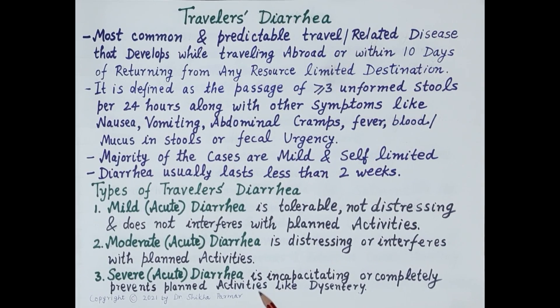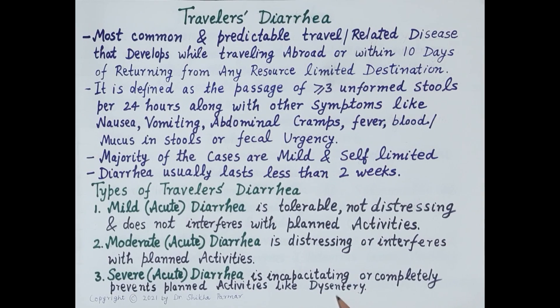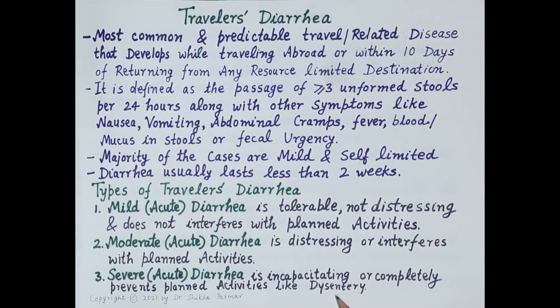Severe travelers' diarrhea is incapacitating and completely prevents planned activity. One example of severe travelers' diarrhea is dysentery, where there is inflammation of the colon and bloody mucoid stools are produced.